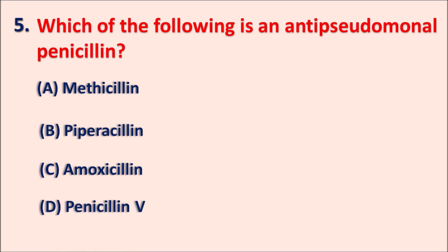All the drugs listed are penicillins and we have to identify which one is an anti-pseudomonal penicillin. Pseudomonas infection is a gram-negative infection which is not easily treated by normal penicillins like penicillin G and penicillin V, so we have to use penicillins which are highly selective for Pseudomonas aeruginosa infections.